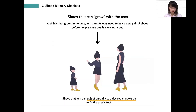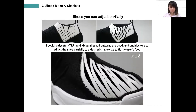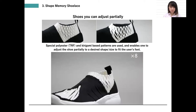A third example of our 4D printed shoes is a pair of children's shoes that can grow with the user. A child's foot grows in no time and parents may need to buy a new pair of shoes before the previous one is even worn out. To ease this household economic issue, we designed a shoe that enables one to adjust the shoe partially to a desired shape or size to fit the user's foot. The patterns are based on kirigami, which is Japanese paper art that includes cutting. Like the other two pairs, this shoe also uses special polyester and opens and closes when exposed to heat.